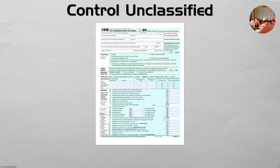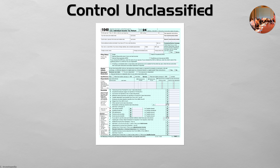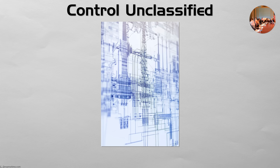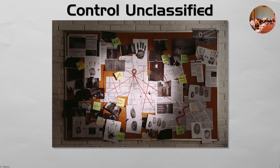Examples include your personal information on a federal tax return, the technical blueprints for critical infrastructure like a power grid, or the active case files for an ongoing criminal investigation.